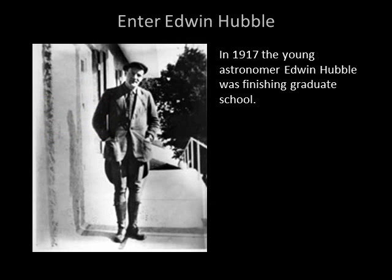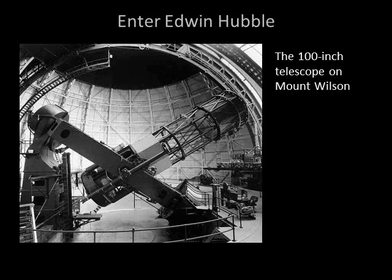In 1917, a young astronomer named Edwin Hubble was finishing graduate school. He was invited to join the staff at the prestigious Mount Wilson Observatory in Pasadena, California. The observatory had just completed construction of a 100-inch telescope, the world's largest at the time. Hubble delayed accepting the position for two years so that he could serve in World War I. But once at Mount Wilson, Hubble began observing the spiral nebulae. With the 100-inch telescope, he could actually resolve individual stars in the Andromeda spiral, suggesting that it was indeed a separate galaxy.